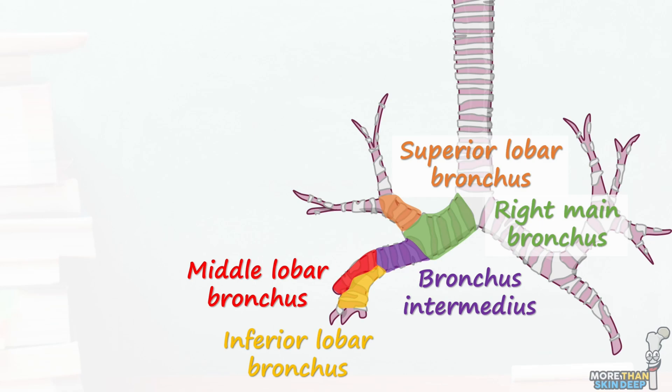You'll notice that there's one lobar bronchus for each major lobe of the lungs. Next, the lobar bronchi will branch into segmental bronchi, which join their individual bronchopulmonary segment of the lung.